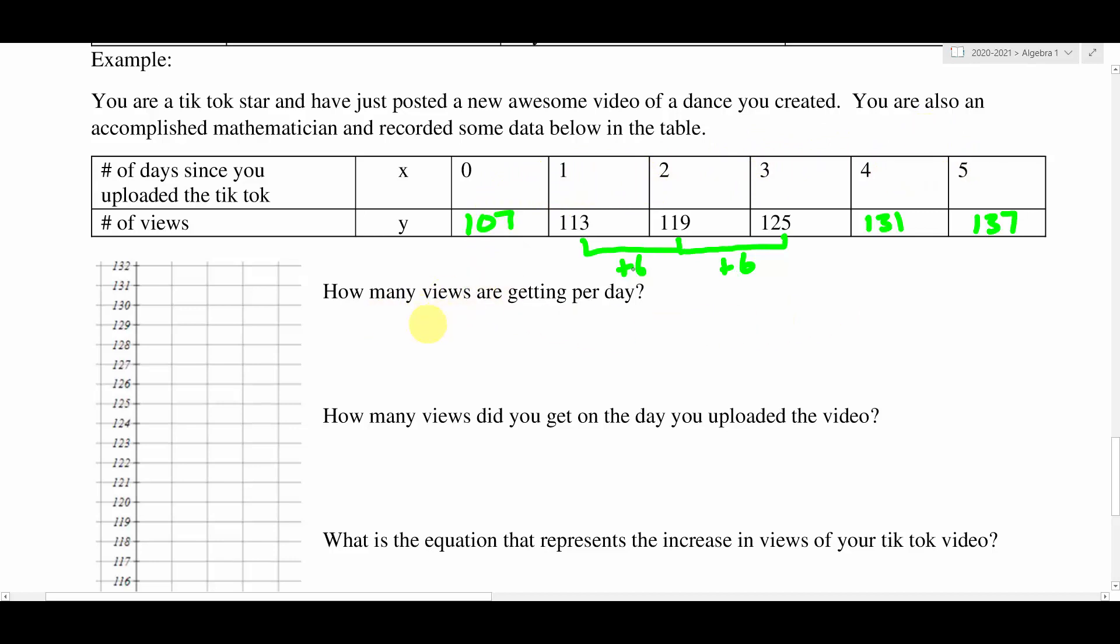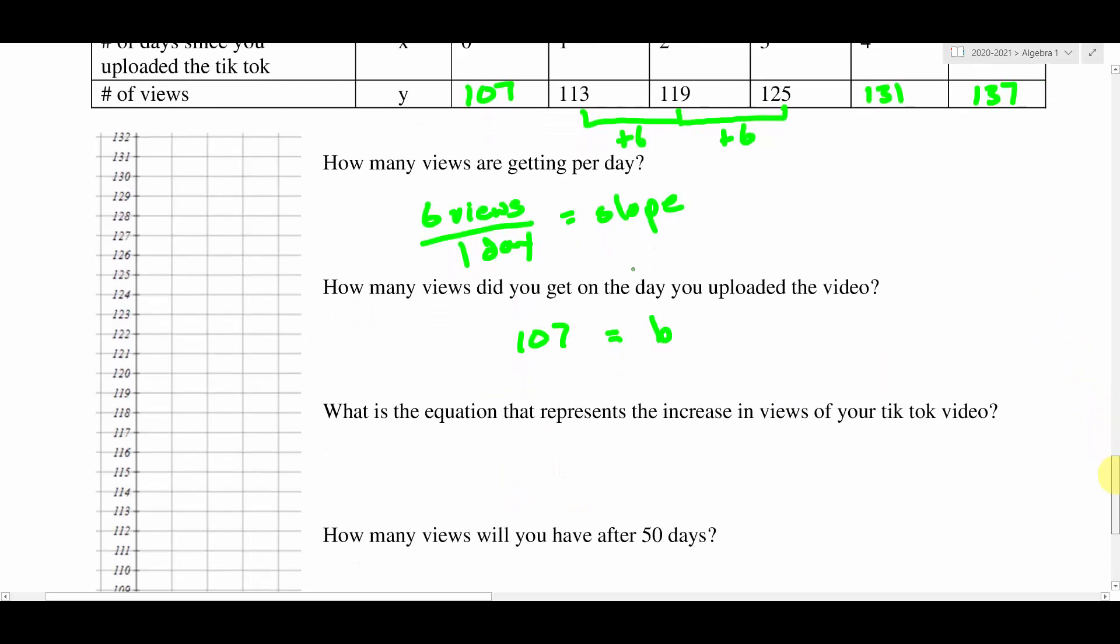And that's the first question that we need to answer. How many views are you getting per day? Six. So we'd say six views over one day. Six views per day. So you can imagine what we're describing here. This is our slope. And how many views did you get on the day you uploaded the video? So this is the starting point. This is the initial amount of views that we got on day zero when we uploaded the video. And according to our table here, we had 107 views. This is our b-value. This is that initial value that we're looking for that we will need when we go to write our equation for this thing.